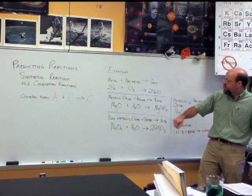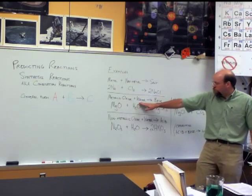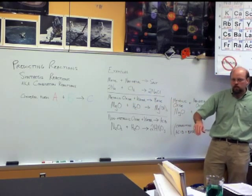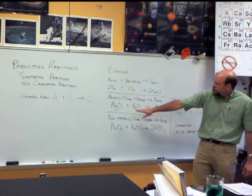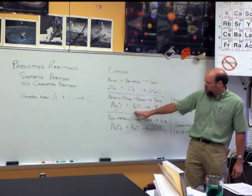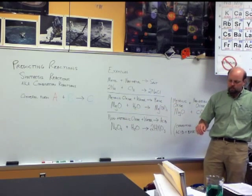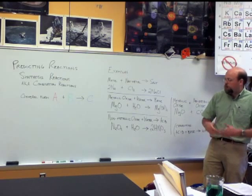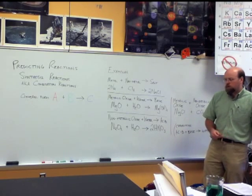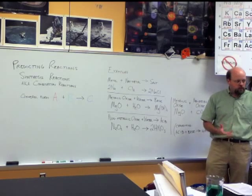Metallic oxide plus water makes a base, or at least a basic solution, provided that it is soluble in water. In this case we have magnesium oxide plus water to make magnesium hydroxide. Other metallic oxides would do similar things - sodium oxide, calcium oxide, various other metallic oxides would do much the same thing.